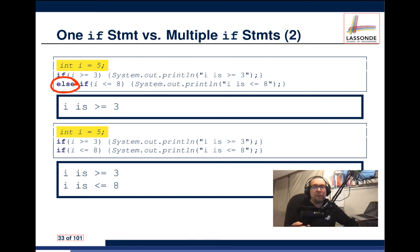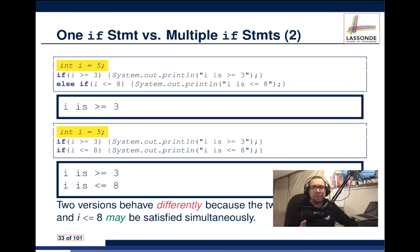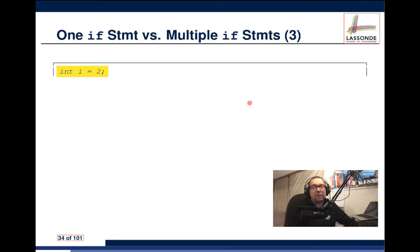The two versions behave differently because the two conditions — i greater than or equal to 3, and i less than or equal to 8 — can be satisfied simultaneously. Looking at the number line with 3 and 8 marked, there are numbers in between that satisfy both conditions at the same time. This shows that the else component can be really important.